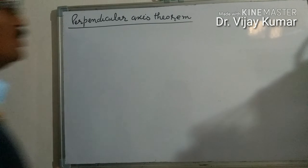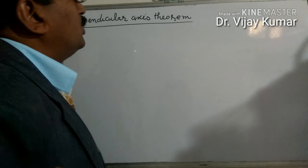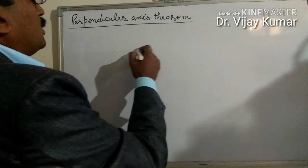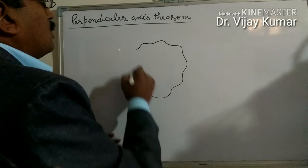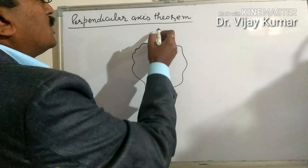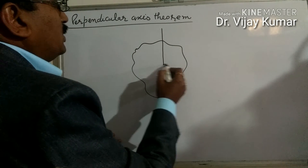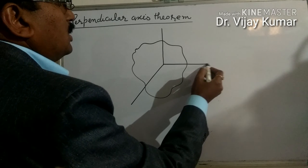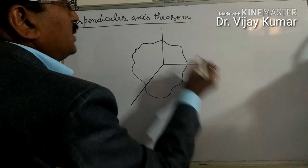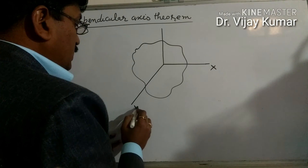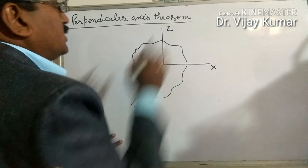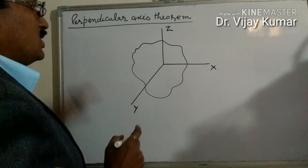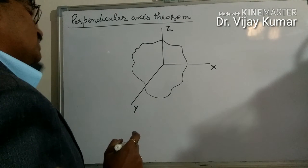The second theorem to determine the moment of inertia is the perpendicular axis theorem. Suppose we want to determine the moment of inertia about an axis. This is the x-axis, y-axis, and this is the z-axis, and we want to determine the moment of inertia about the z-axis.